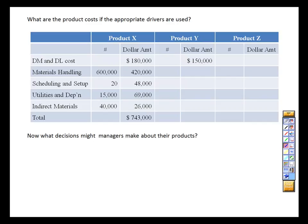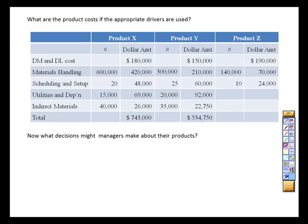Let's turn to Product Y. We start with our direct materials and direct labor, and we've got 300,000 pounds used, 25 setups, 20,000 machine hours, and 35,000 direct labor hours, giving us another brand new cost. Before we compare this total cost to our original, let's take a quick look at the allocations — where did we see most of the cost being generated? Up here in materials handling was a big chunk of it. And how much materials handling did Product Y use? About 30% or so.